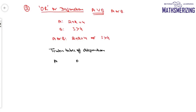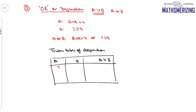Looking at the truth table of disjunction: A and B can have four combinations — true/true, true/false, false/true, and false/false. The compound statement A∨B is true when at least one of A or B is true. So true/true gives true, true/false gives true, false/true gives true. The only case where A∨B is false is when both A and B are false.